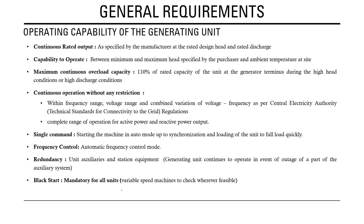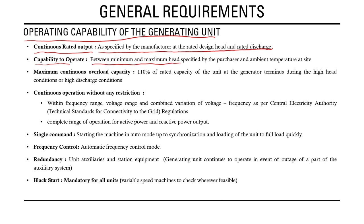Regarding operating capability of hydro generating units, the continuous rated output must be specified by the manufacturer at the rated design head and rated discharge level. The unit must be able to operate between the maximum and minimum head specified by the purchaser and the ambient temperature range. The maximum continuous overload capacity should be 110 percent of the rated capacity at the generator terminals during high head or high discharge conditions.